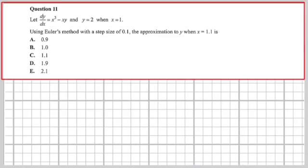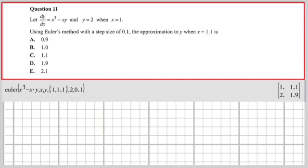Question 11. This is an Euler's method one, which are always very, very simple if you know what to do. We've got dy dx equals x cubed minus xy, and y equals 2 when x equals 1. Alright, using Euler's method with a step size of 0.1, the approximation to y when x is 1.1 is. Okay, piece of cake, guys.